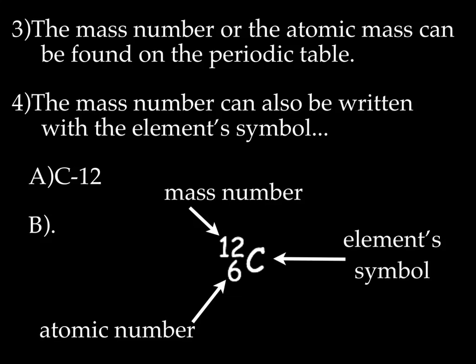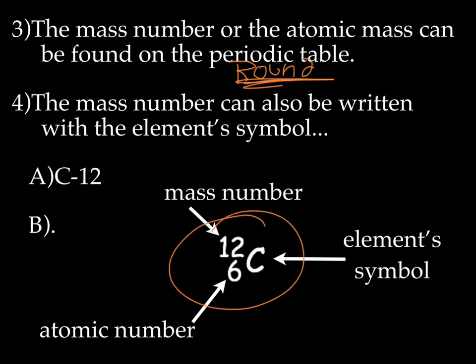The mass number or atomic mass can also be found on the periodic table. Remember, however, that it's an average, so you're going to round because you can't have a fraction — round to the nearest whole number. The atomic mass can also be written with the element symbol. For carbon, its atomic number is six and its mass number is 12. Remember, atomic number is the number of protons and also the number of electrons.